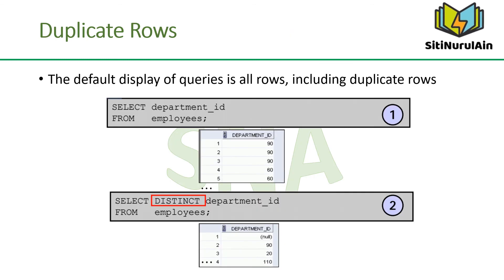To eliminate duplicate rows in the result, include the DISTINCT keyword in the SELECT clause immediately after the SELECT keyword. In the second example, the Employees table actually contains 20 rows, but there are only 7 unique department numbers in the table.